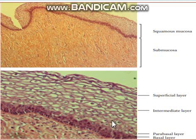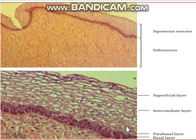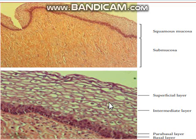The cells in the parabasal layer undergo differentiation. As they migrate further upward, the next layer is called the intermediate layer, where the cells become flattened in structure and their nuclei are now compressed.